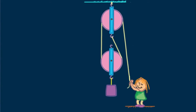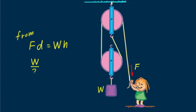Here's a double pulley system. This time Nellie pulls downward. How many strands support the load? It's just two — the strand Nellie is holding doesn't directly support the load. So the tension is W over 2. From F times D equals W times H: W over 2 times D equals WH, so H equals half D. The height raised is half the distance that Nellie pulls. If she pulls downward 50 centimeters, the load rises 25 centimeters.